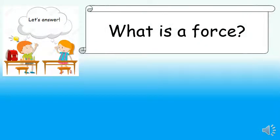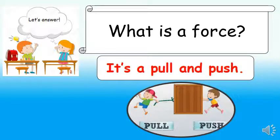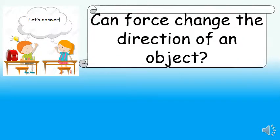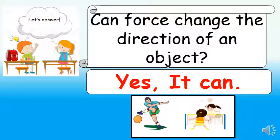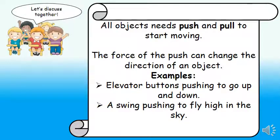So based on the given examples children, what is a force? Alright, so it's a pull and a push. So can force change the direction of an object? Amazing! Yes, it can! Because all objects need push and pull to start moving. The force of the push can change the direction of an object. For example, when you are pushing the button of an elevator, it will go up and down. And when you are pushing the swing, it will fly high in the sky.